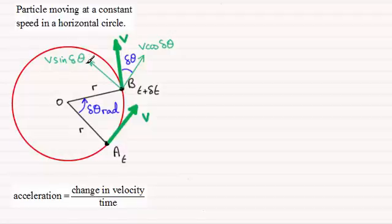Now what I want to do next is consider the acceleration in two perpendicular directions. One in this direction and one in this direction. So let's start then by looking at the acceleration perpendicular to the radius AO. And by definition this is equal to the change in velocity divided by the time.